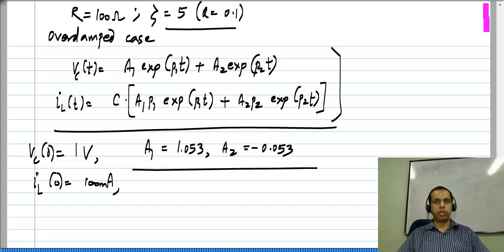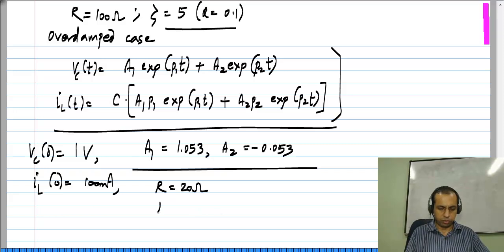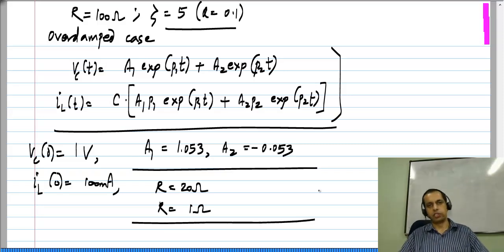So now you have the complete natural response. I have shown it for the overdamped case, but please try it out with the same initial conditions for the other two cases with R equals 20 ohms and R equals 1 ohm as well. Of course, you can also try it for some other cases, and you can also plot these things and see how they look like.